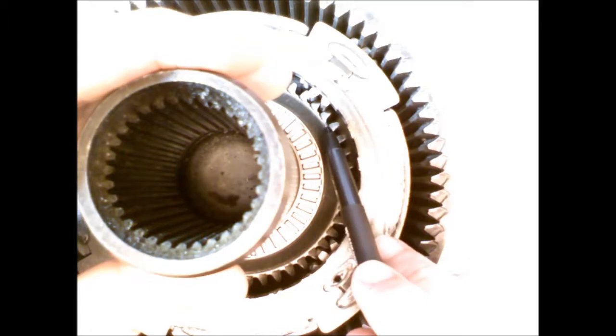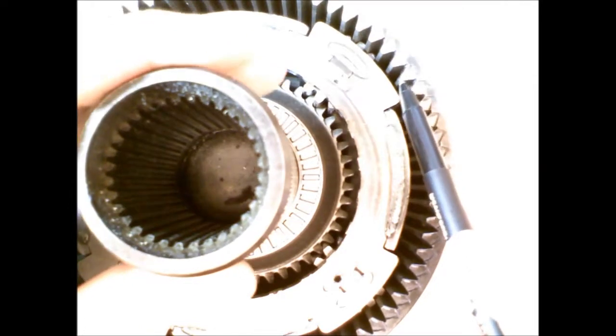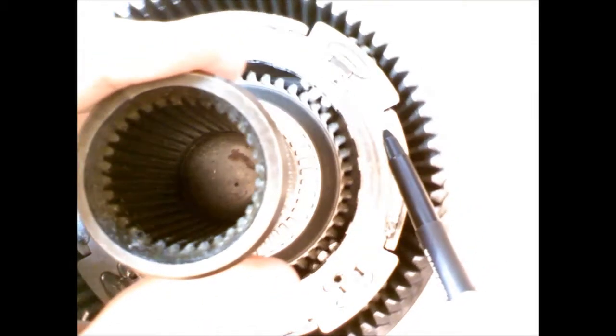If I rotate the sun gear counterclockwise, the planet gears rotate clockwise, and the ring gear also rotates clockwise. So this is a reverse direction for this planetary gear set.